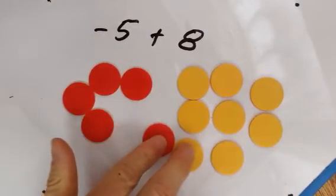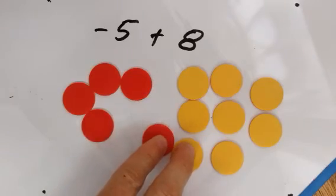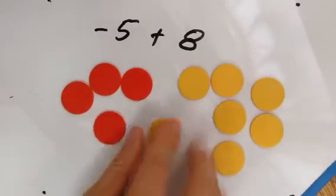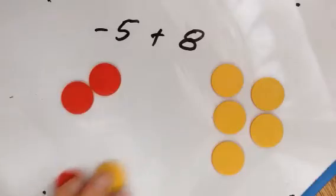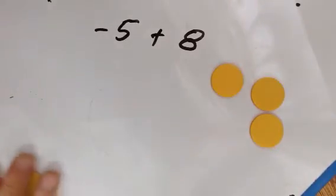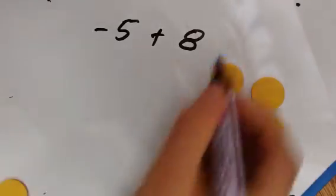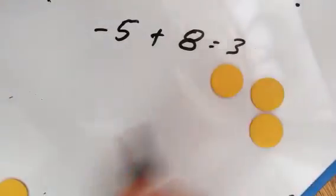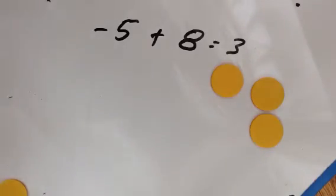Then we're going to match up these positives and negatives and cancel them out. So here's one set that cancels, two, three, four, and five. We're left with three yellows. And we know that yellow is positive, so that's positive three.